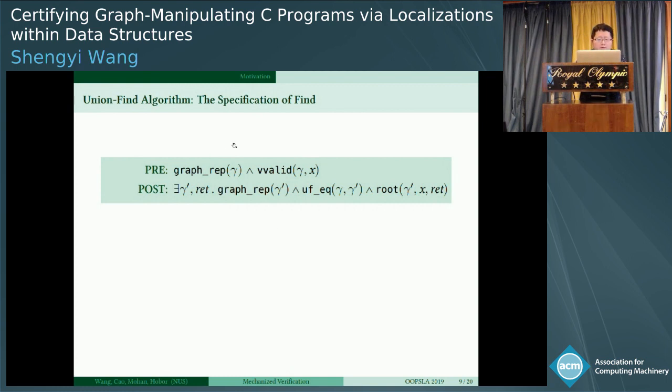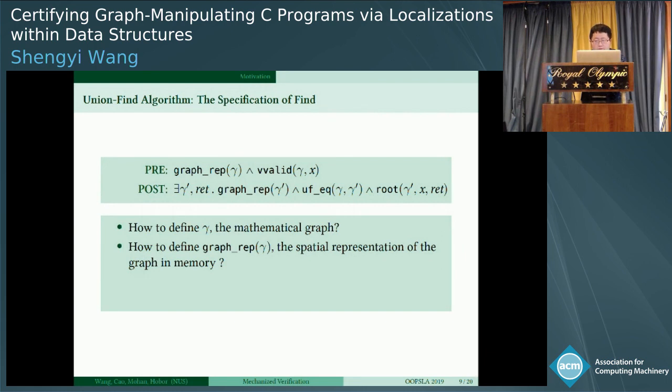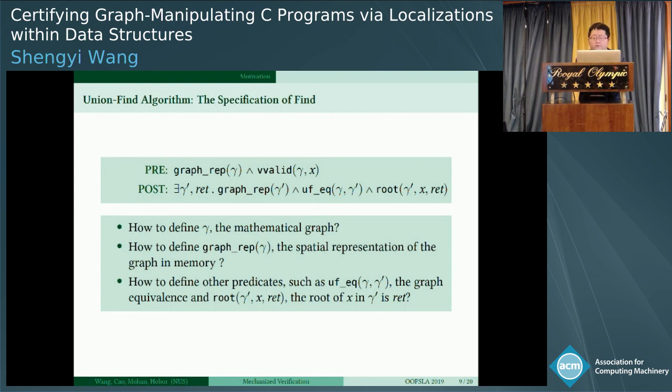So we can see the find function not just returns the root but also changes the data structure. So how to specify the functional correctness of it? We treat it like a graph. Assuming we have a graph gamma, its memory representation is graph_rep gamma, and x is one valid vertex of it. Then after the execution of find, it will change to gamma prime, another graph, and the memory representation is graph_rep. These two graphs are equivalent in some sense because they don't change the root actually, and the return value is really the root of x. Now there are several problems. How to define the mathematical graph gamma? How to define the spatial representation of the graph in memory? And how to define other predicates such as the graph equivalence and the root predicate? The root of x in gamma prime. We will solve these in the following slides.